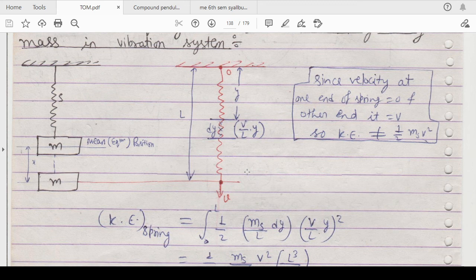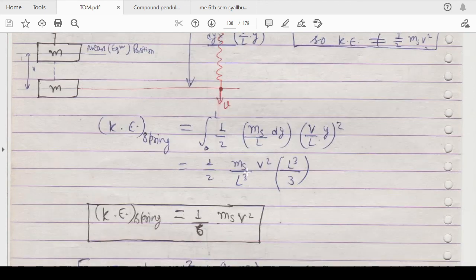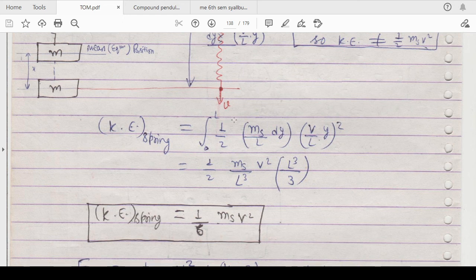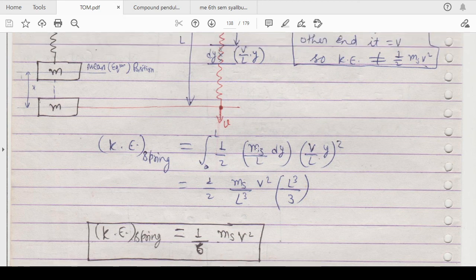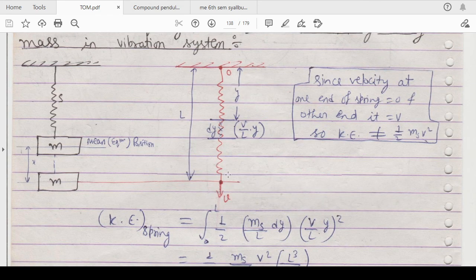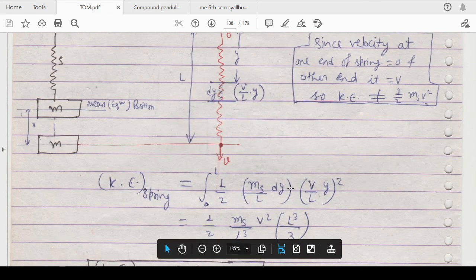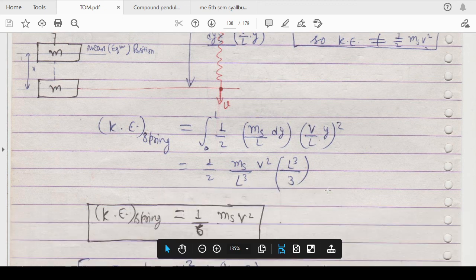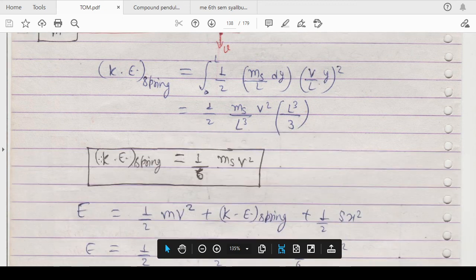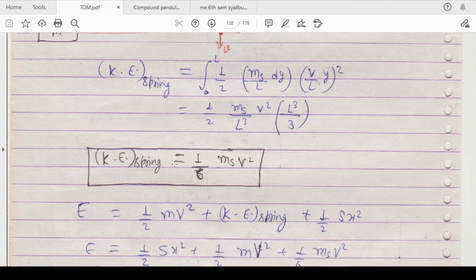If you want to calculate the kinetic energy of the spring, it will be equals to half m v squared, where m equals ms/l into dy and v is velocity for this section. This will be equals to v into y/l whole squared. In this way you can calculate the kinetic energy of spring which will be equals to 1/6 ms into v squared.